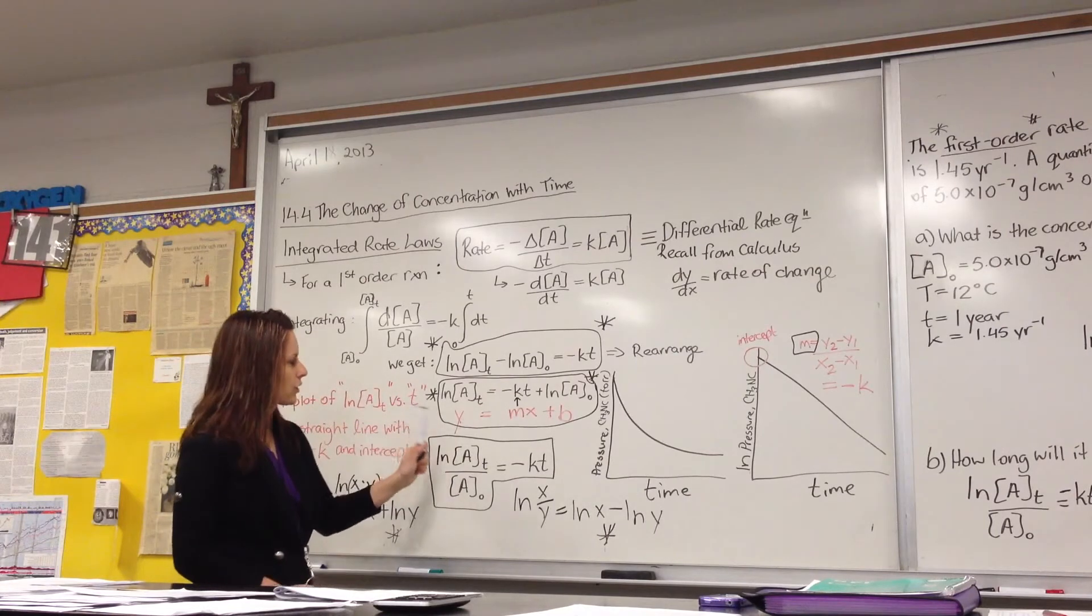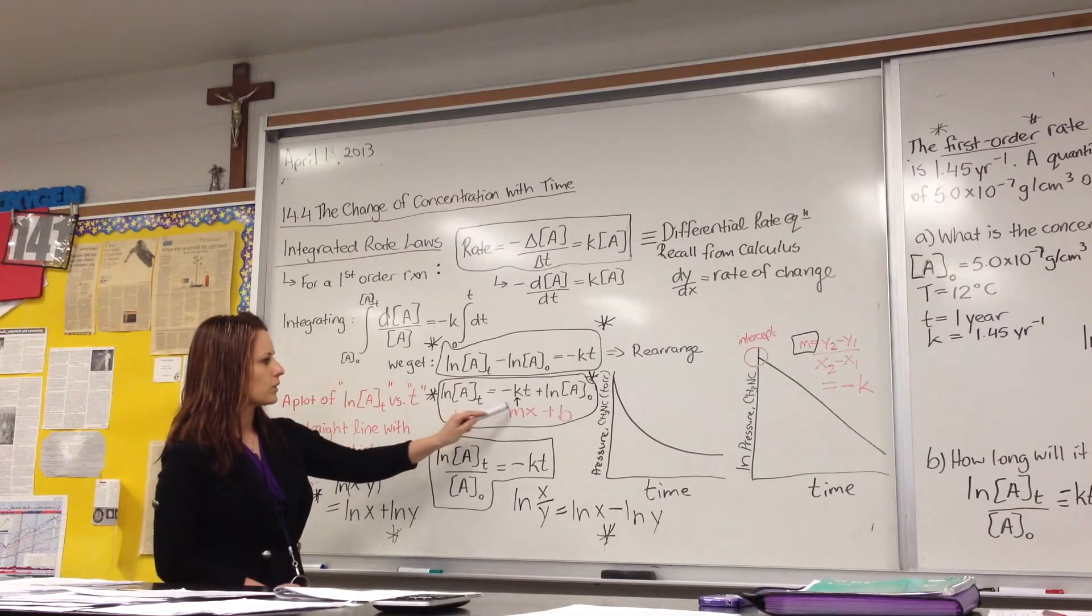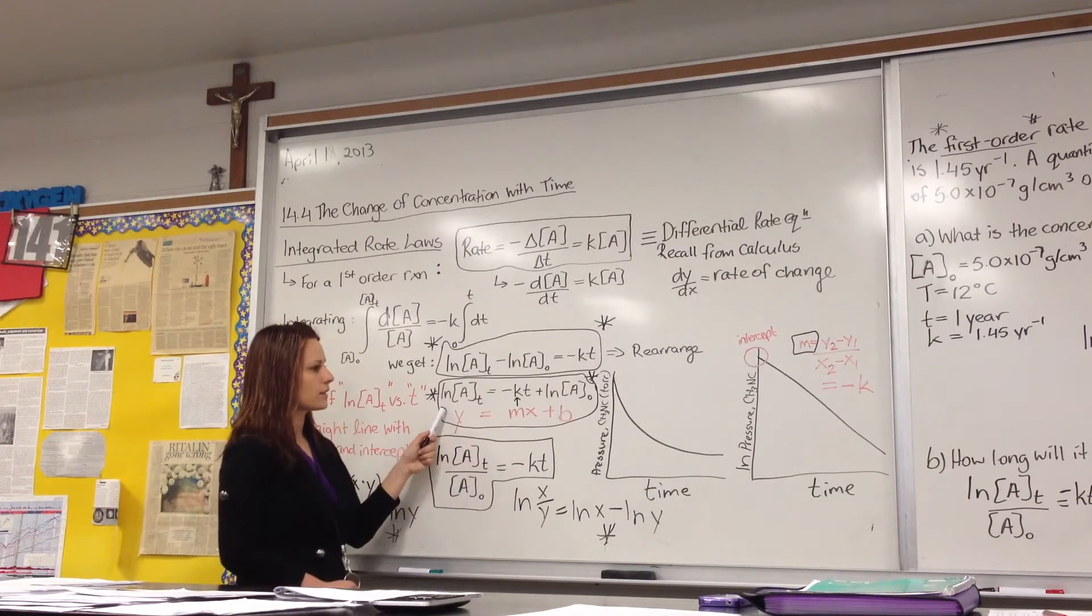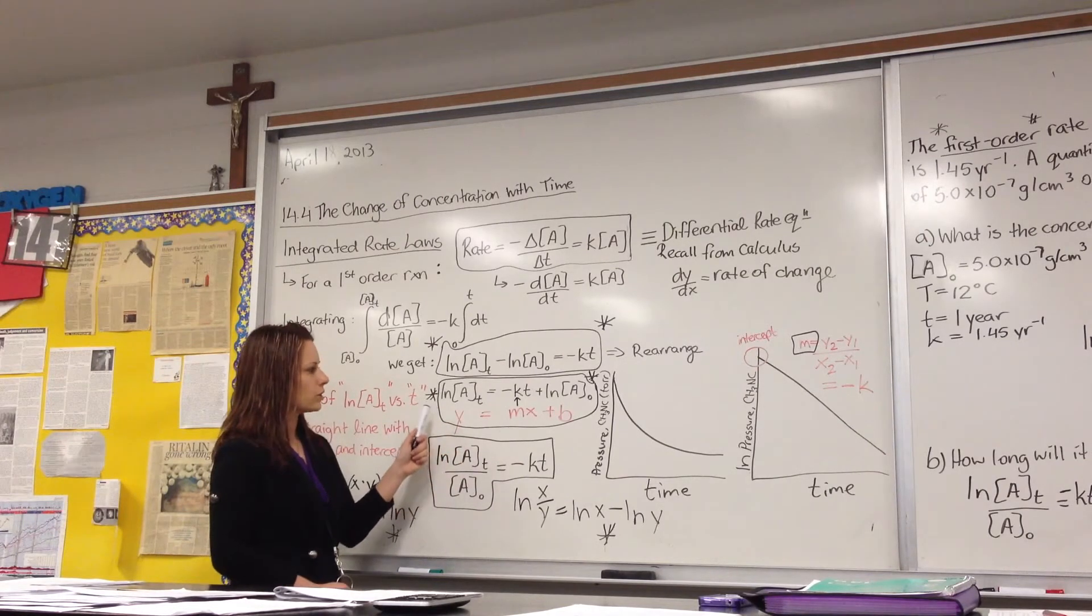If we rearrange this so that we get ln of A at time T equals the negative of KT plus the ln of A naught, if you have a look, this actually resembles Y equals MX plus B, which is our equation of a straight line.